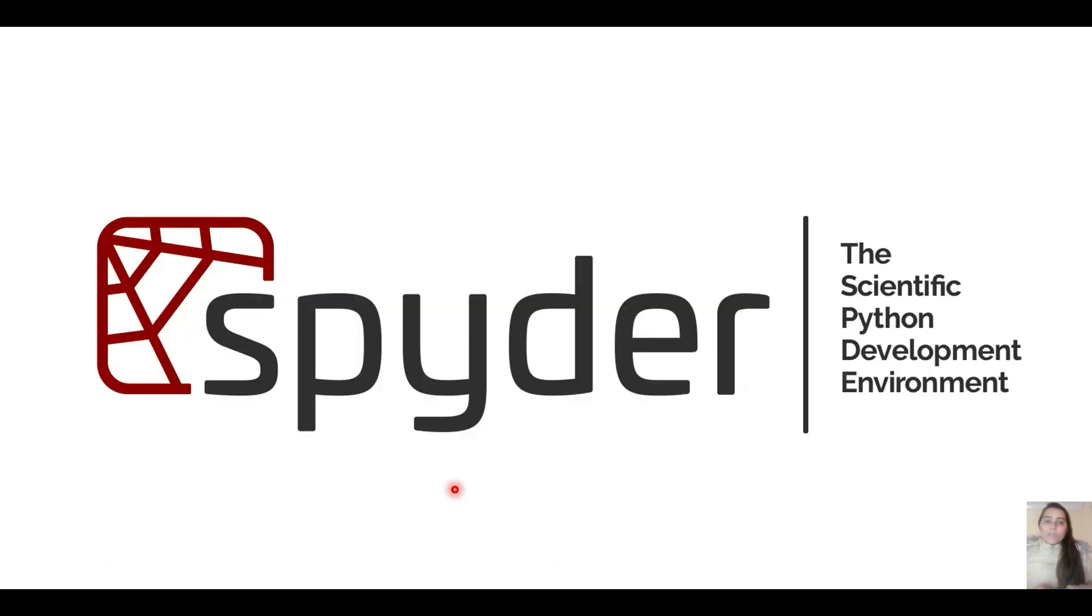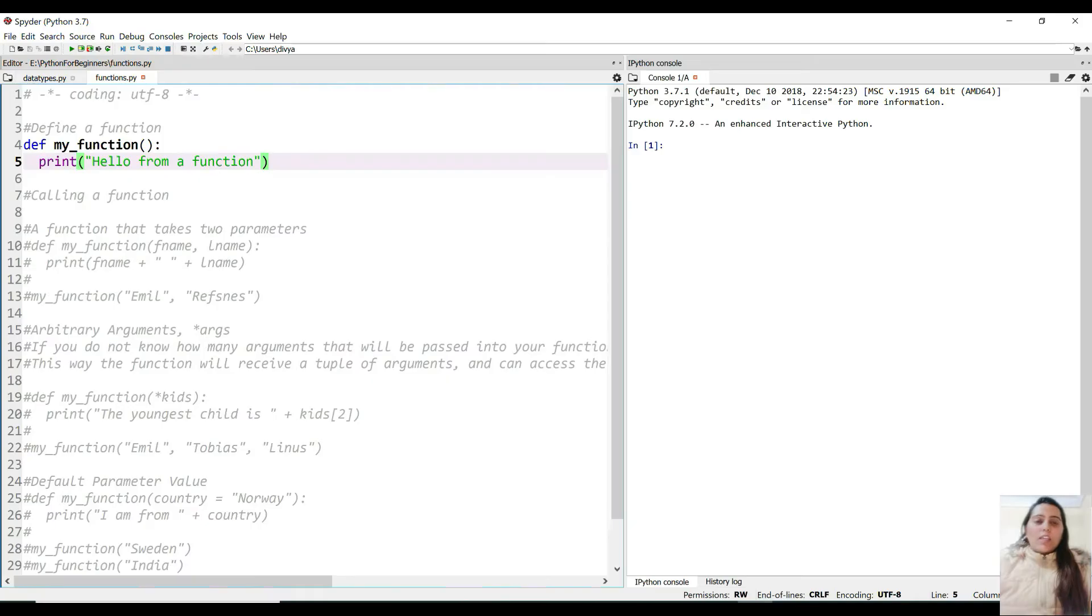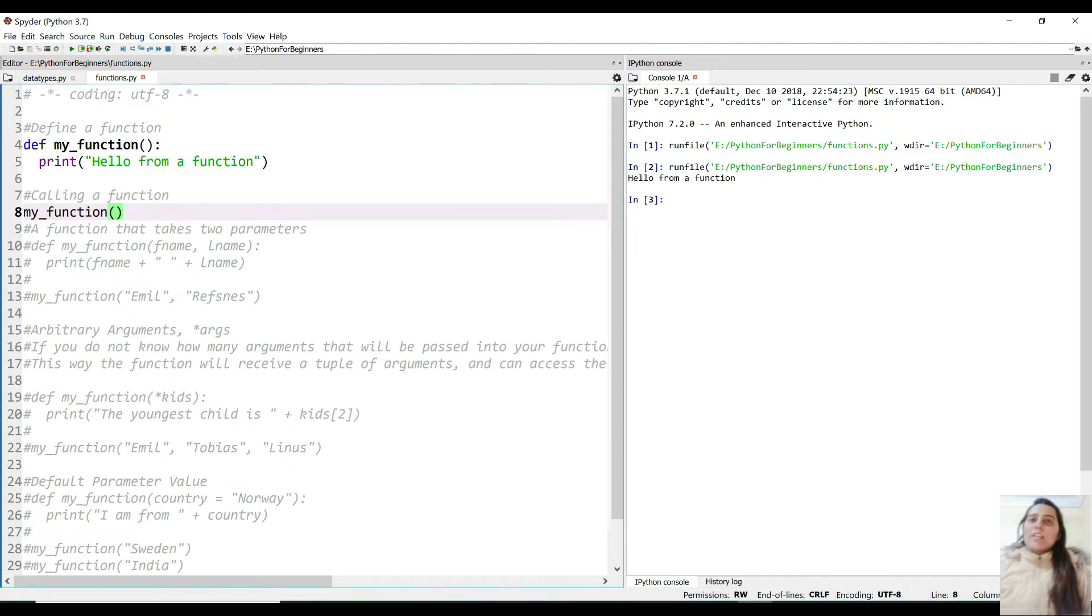Let's code in a Spyder IDE and see. Hello and welcome. Let's code functions in Python. I've used this keyword def and the name my_function and this print statement over here. This is not running until I call this function. Let me call this and run this. Hello from a function is getting printed.